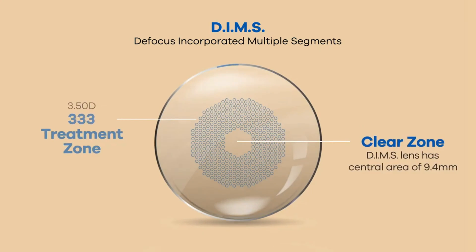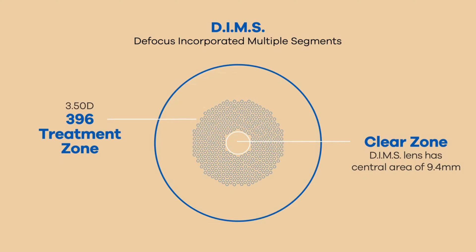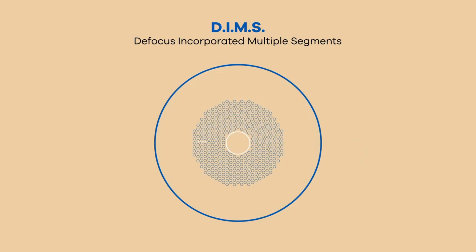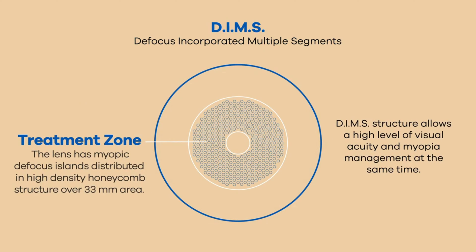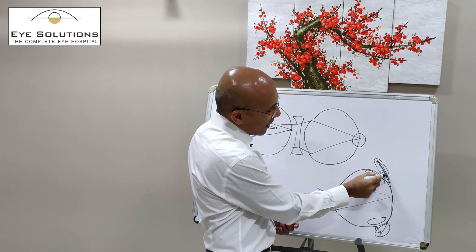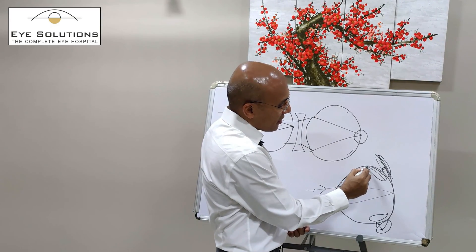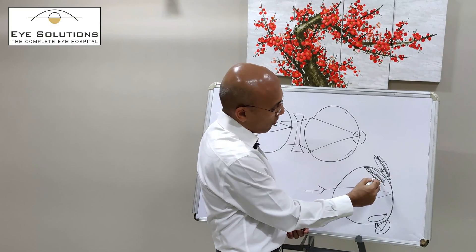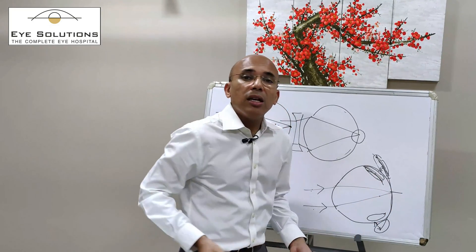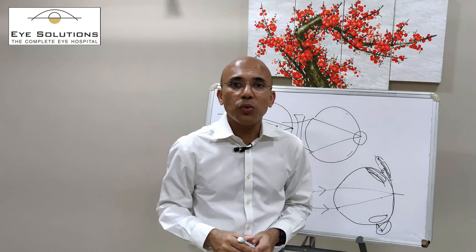The central zone takes care of central vision and works like any other spectacle lens. The peripheral zone has a honeycomb pattern with a plus number applied to parts of it. This plus power moves the peripheral rays of light forward — in front of the retina — which reduces the stimulus for the eye to grow longer. That is how these lenses work.